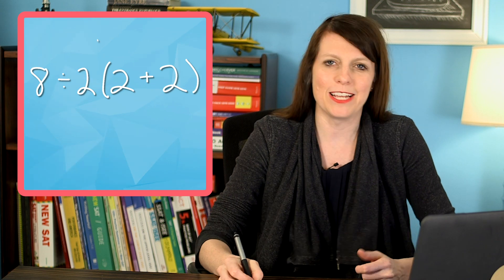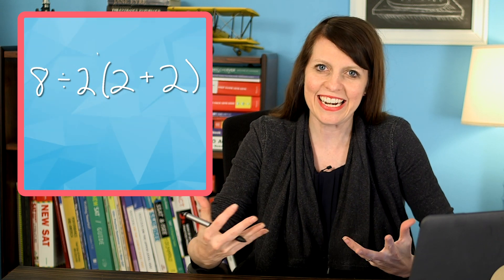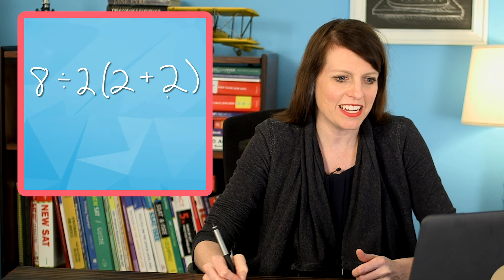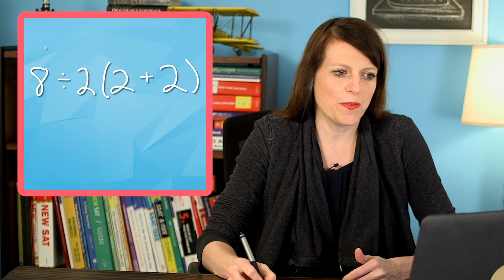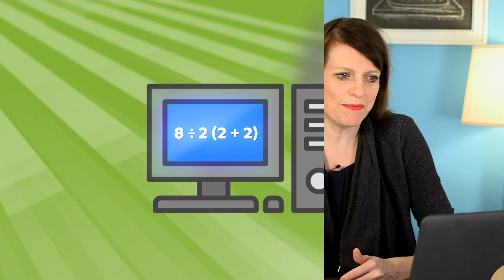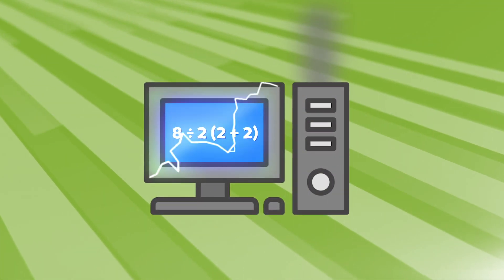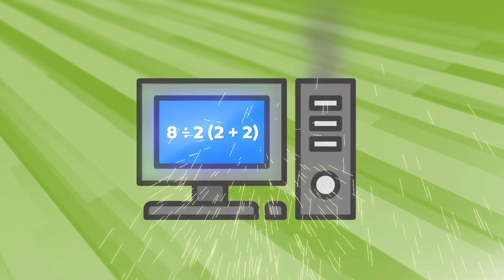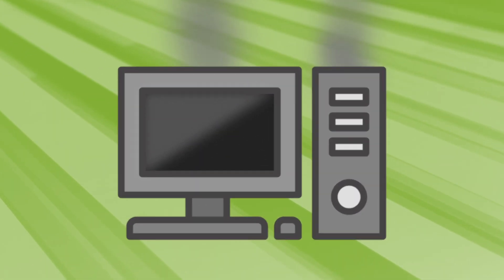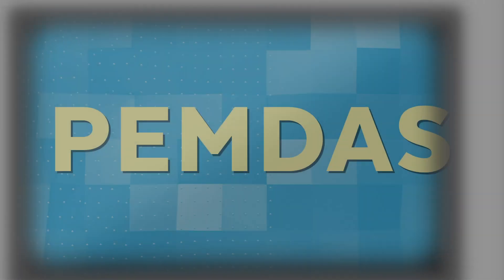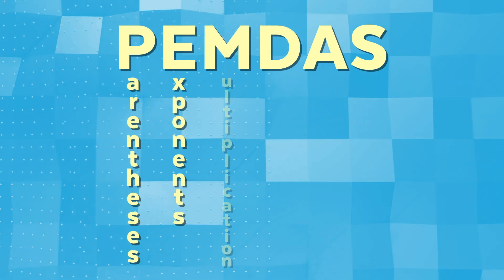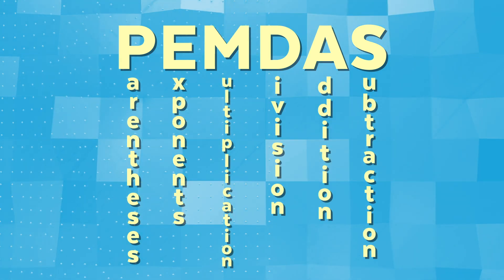So let's take a look at this problem that has broken the internet: 8 divided by 2 times the quantity 2 plus 2. The reason this is breaking the internet is that everyone seems to be arguing about PEMDAS — parentheses, exponents, multiplication, division, addition, and subtraction.